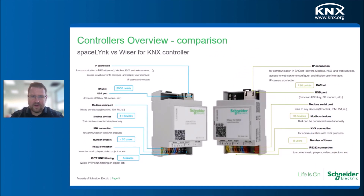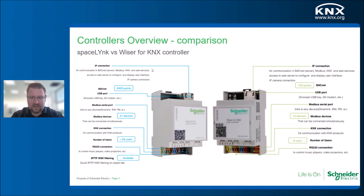Here you can see the comparison between these two controllers. As we already said, they target different segments. Therefore, on the left side we have the Spacelogic, which is practically an unlimited logic controller for big building installations. On the right side, we have the Wiser for KNX, which is used for residential projects and houses — so it's not necessary to have unlimited functionalities there. Both of these controllers can run the KNX third-party IoT API, so they can be used fully with integration in the KNX IoT world.